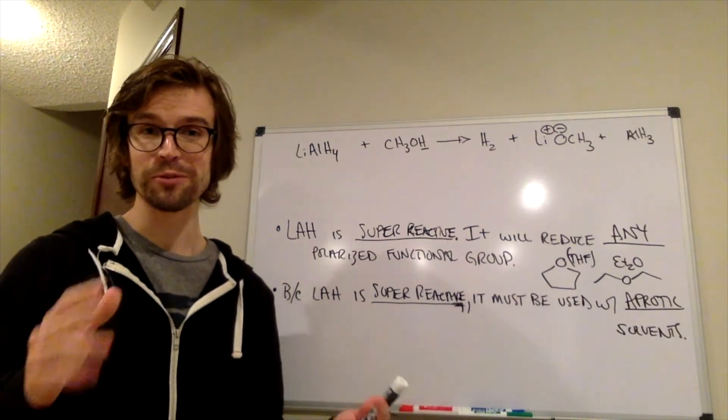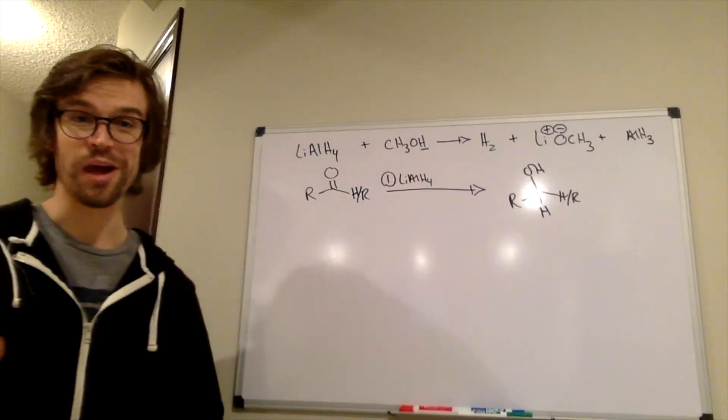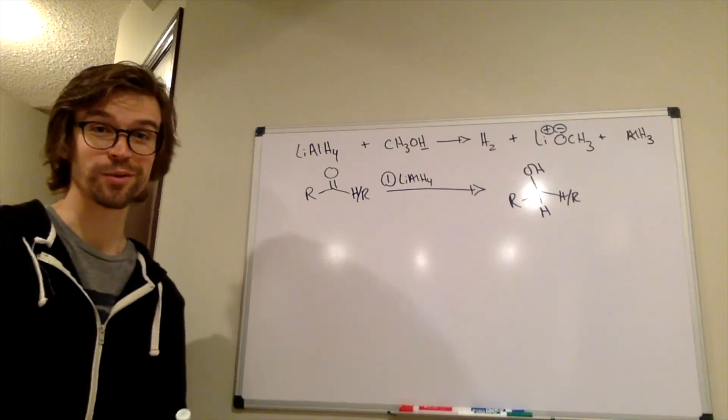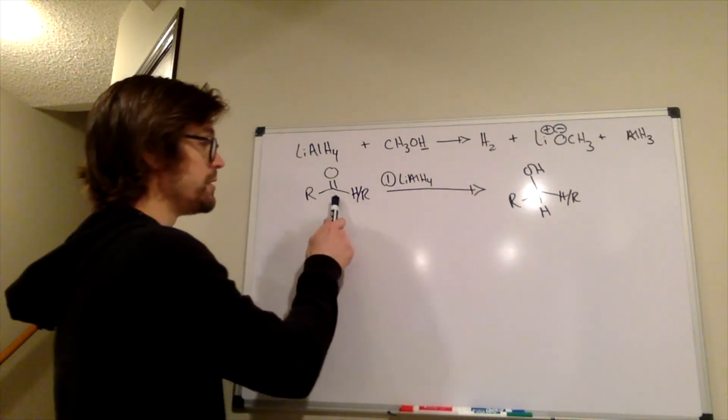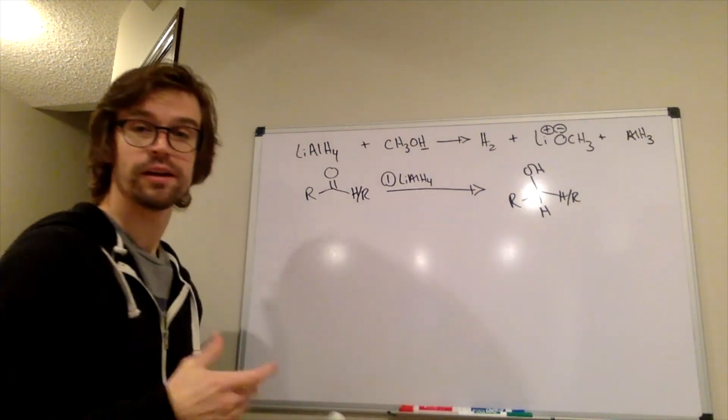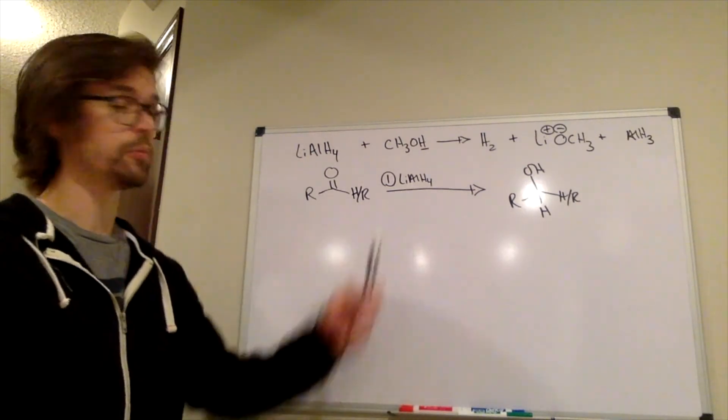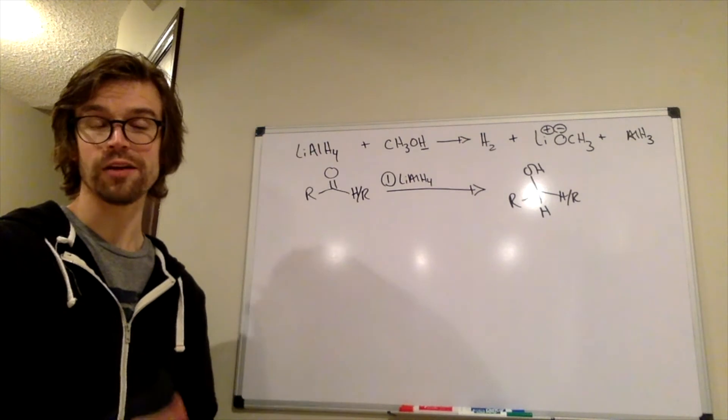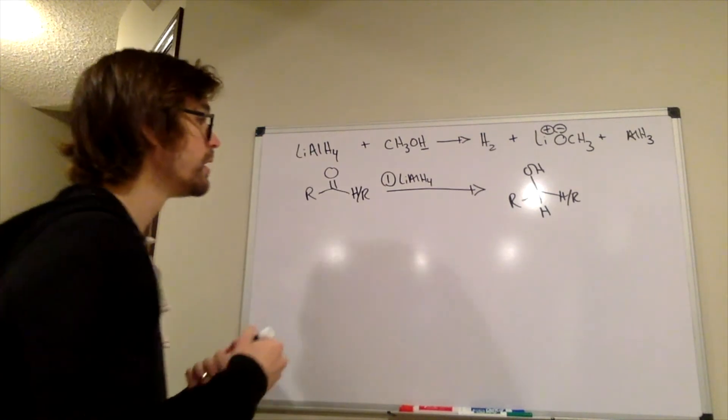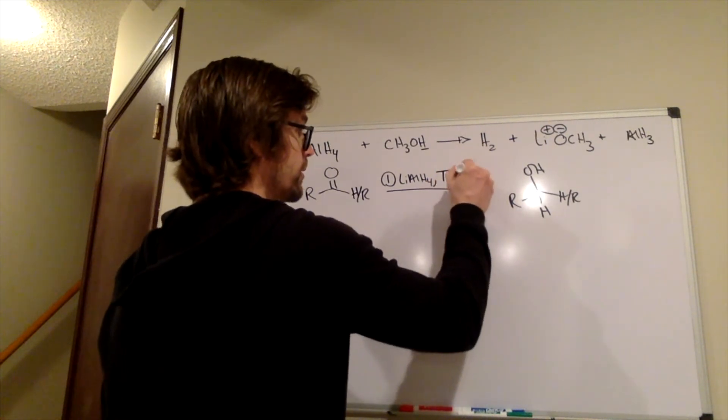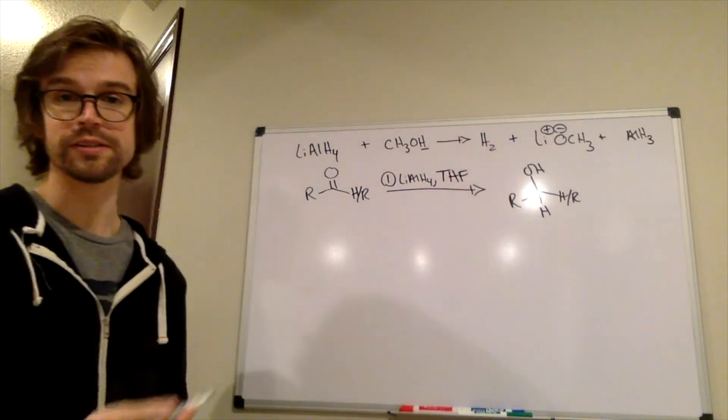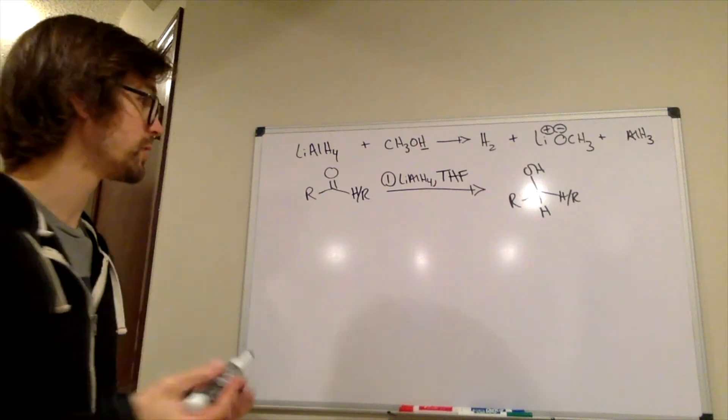So we can only use lithium aluminum hydride if we're using aprotic solvents. So how does lithium aluminum hydride work? We asked the question a second ago. Well, if we want to reduce the ketone or the aldehyde to the alcohol, we'll use our lithium aluminum hydride, but we can't just have it by itself. We have to have some solvent that it's in. So we would write down one of those solvents. I'm just going to write THF for that cyclic ether that was previously up on the board. How is this going to work?